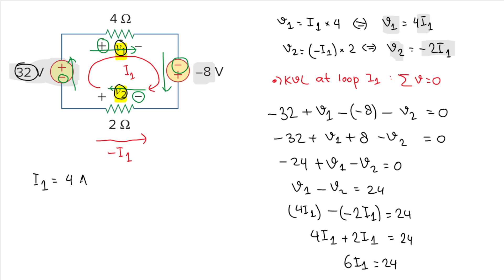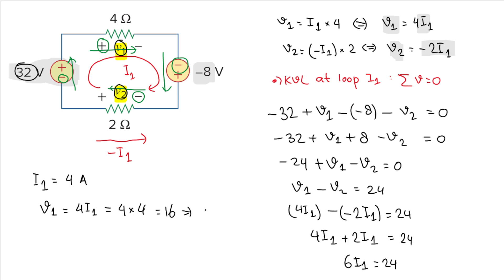Dividing both sides by 6, we get i1 equals 4 amperes. The question asks for v1 and v2, not i1. Using v1 equals 4i1: v1 equals 4 multiplied by 4, which equals 16 volts.